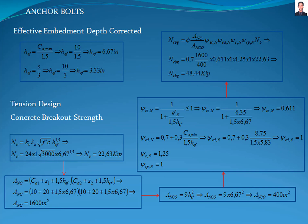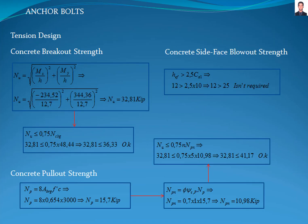Now we calculate the concrete breakout strength of the anchor group in tension with equation 17.6.2.1b of the ACI 318 standard, where phi is a reduction factor equal to 0.7 according to table 17.5.3b, giving a result of 48.44 kilopounds. We then calculate the tension force acting on the anchor bolts using this equation, where Mx and My are the bending moments in the x and y directions and h is the diameter of the column, giving a result of 32.81 kilopounds. Due to the seismic design, the concrete breakout verification shall satisfy paragraph b of section 17.10.5.4 of the ACI 318 standard. The verification passed.